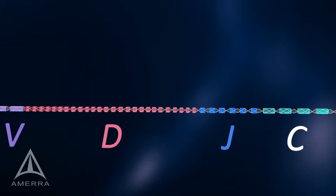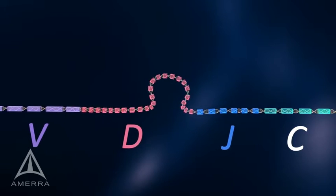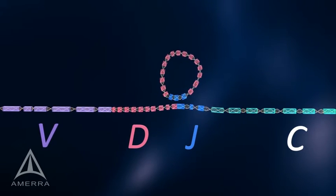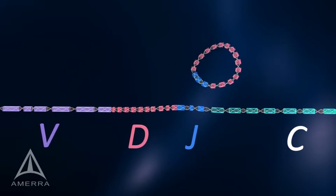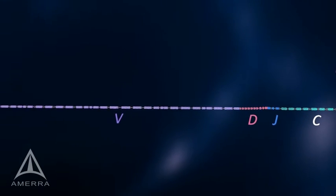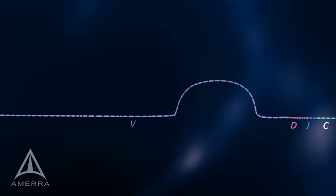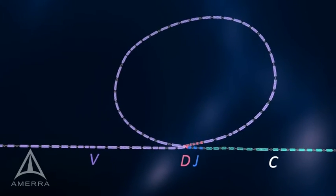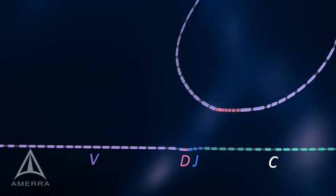First, one D gene segment merges with one J gene segment in a random fashion, and the intervening gene segments are discarded. Next, a V gene segment is selected in a random fashion and merges with the rearranged D and J segments. Again, the intervening gene segments are discarded.